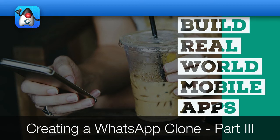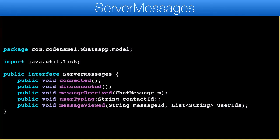The next step is the other classes within the model package. The rest is relatively trivial after the server class. This is the callback interface we used within the server class. It's pretty trivial, and I added some methods for future enhancement too.